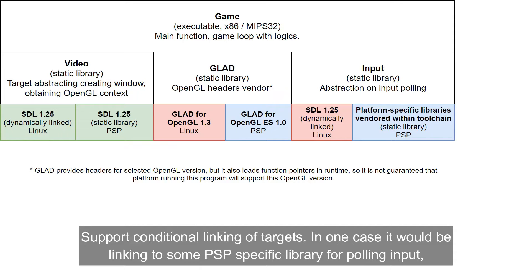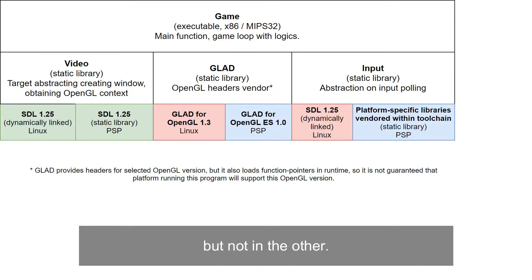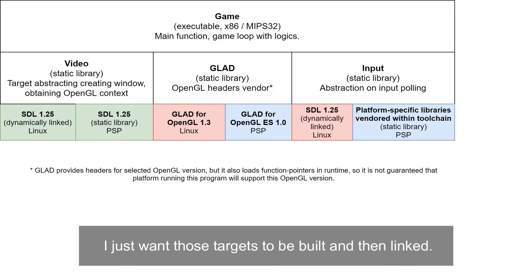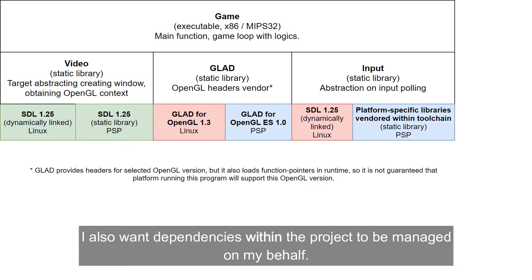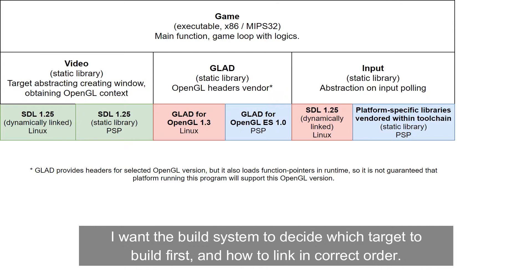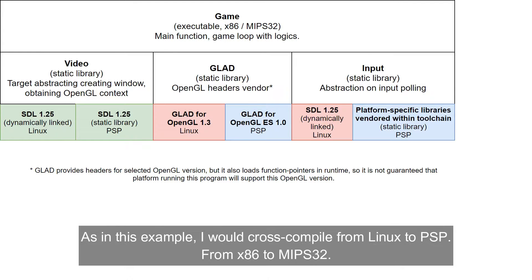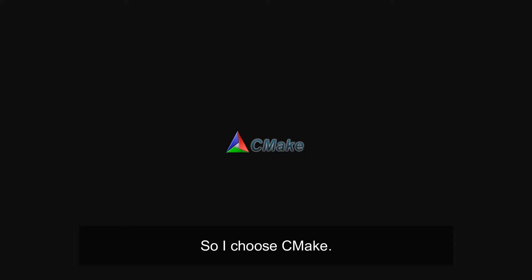Having this full view of the project, I needed a build system supporting conditional inclusion of files into targets — defining GLAD with OpenGL ES 1.0 or OpenGL 1.3 declarations depending on platform — conditional linking, high-level target management without writing platform-specific makefiles, automatic dependency ordering, and easy cross-compilation from one platform to another, such as cross-compiling from Linux to PSP, from x86 to MIPS32. So I chose CMake.